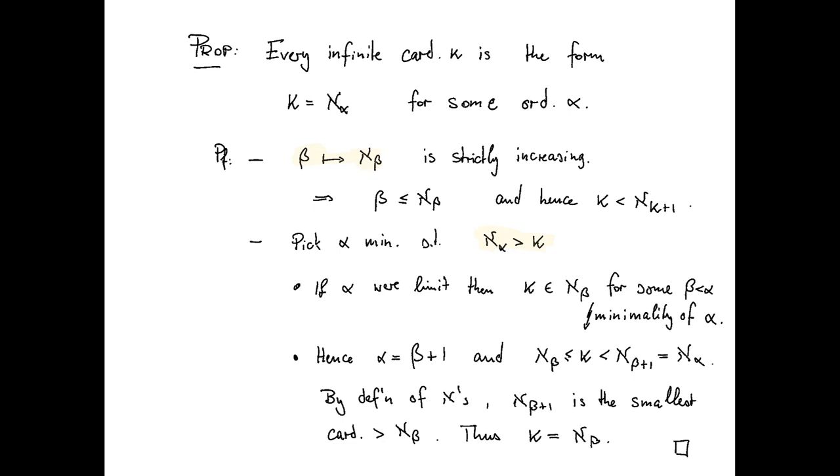So it therefore follows that alpha must be a successor ordinal, let's say beta plus one, and kappa must be greater than or equal to aleph beta and strictly less than aleph sub beta plus one, which is equal to aleph sub alpha.